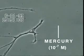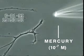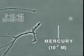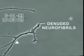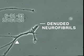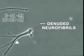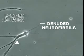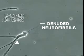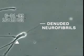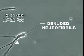Over the next 30 minutes, the neurite membrane underwent rapid degeneration, leaving behind the denuded neurofibrils seen here. In contrast, other heavy metals added at this same concentration — such as aluminum, lead, cadmium, and manganese — did not produce this effect.